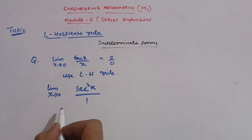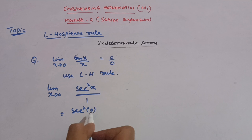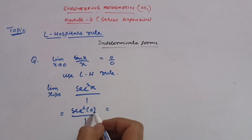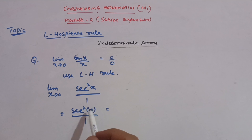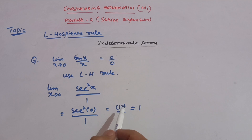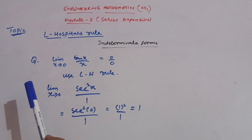The differentiation of x is 1. Now put x = 0: sec²(0)/1. Since cos(0) = 1, sec(0) = 1 as well — sec is the reciprocal of cos, and cosec is the reciprocal of sin. So sec²(0) = 1² = 1, giving us 1/1 = 1. We got the constant value, so no need to apply L'Hôpital's rule again. In the next video, I will solve more important questions on this method. Thank you for watching.